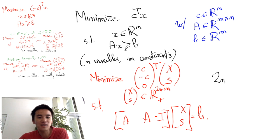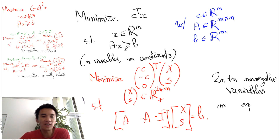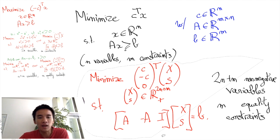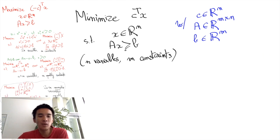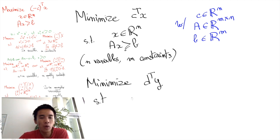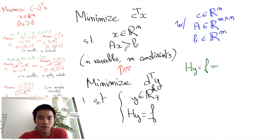Finally, let me mention a last useful trick which is to translate a program with k non-negative variables and m equality constraints into a program that looks like our original program. Say we start with minimize D transpose Y with Y in R^k plus and HY equals F, and we want to turn this into minimize C transpose X with X in R^n and AX greater or equal to B. The trick is to note that HY equals F is equivalent to HY greater or equal to F and HY smaller or equal to F.